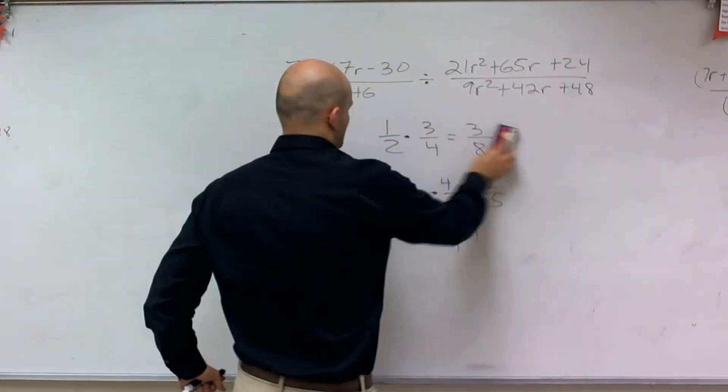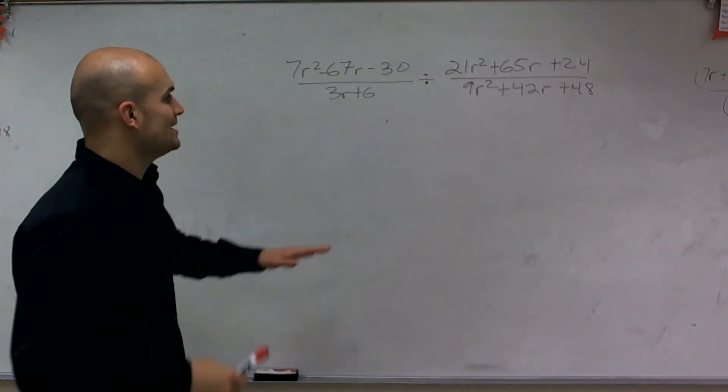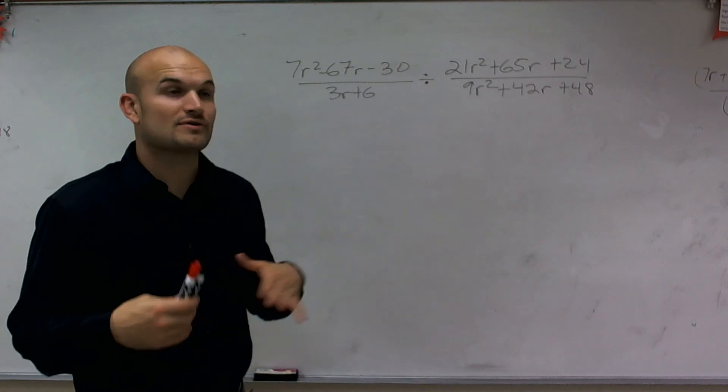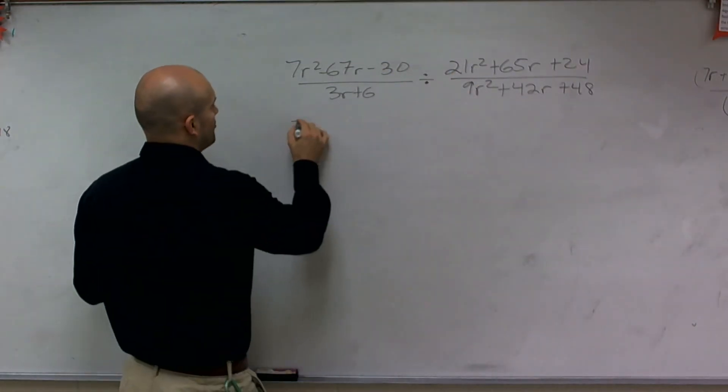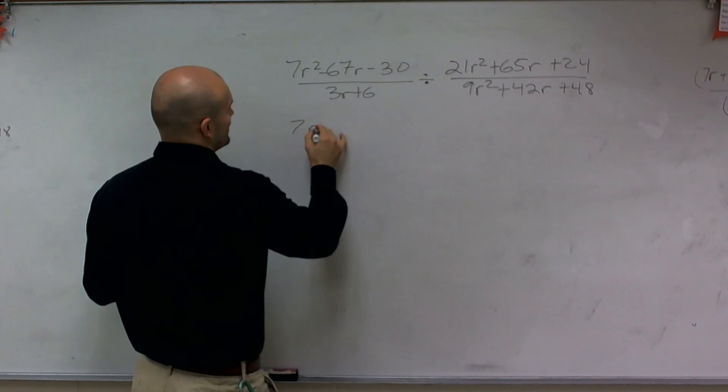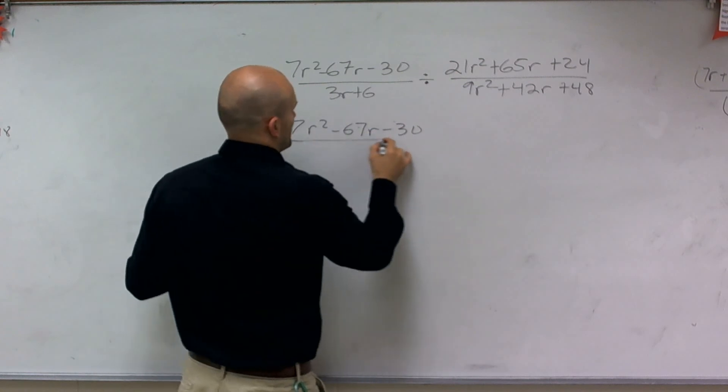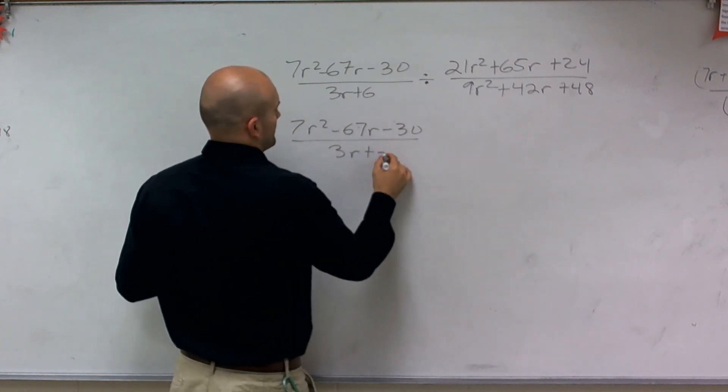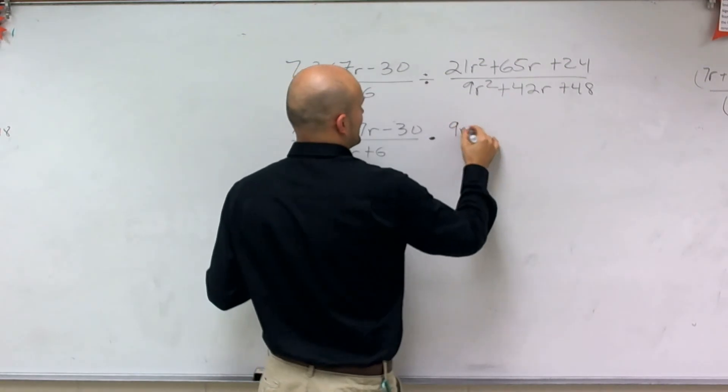So automatically, before I even start looking at this problem because I see some pretty big numbers, I know that to simplify this I'm going to want to reciprocate my divisor and multiply. So I'm going to rewrite the whole problem and then change it to a multiplication and then reciprocate the divisor.